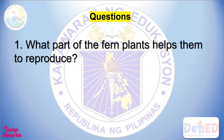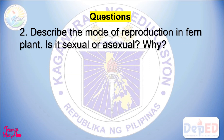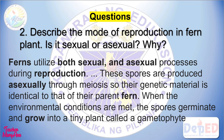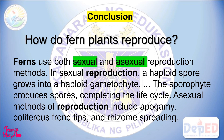What part of the fern plants helps them to reproduce? Spores help the fern plants to reproduce. Describe the mode of reproduction in fern plants — is it sexual or asexual? Why? Ferns utilize both sexual and asexual processes during reproduction. Spores are produced asexually through meiosis, so their genetic material is identical to that of their parent fern. When environmental conditions are met, the spores germinate and grow into a tiny plant called a gametophyte. How do fern plants reproduce? Ferns use both sexual and asexual reproduction. In sexual reproduction, a haploid spore grows into a haploid gametophyte, and the sporophyte produces spores, completing the life cycle. Asexual methods include apogamy, proliferous frond tips, and rhizome spreading.